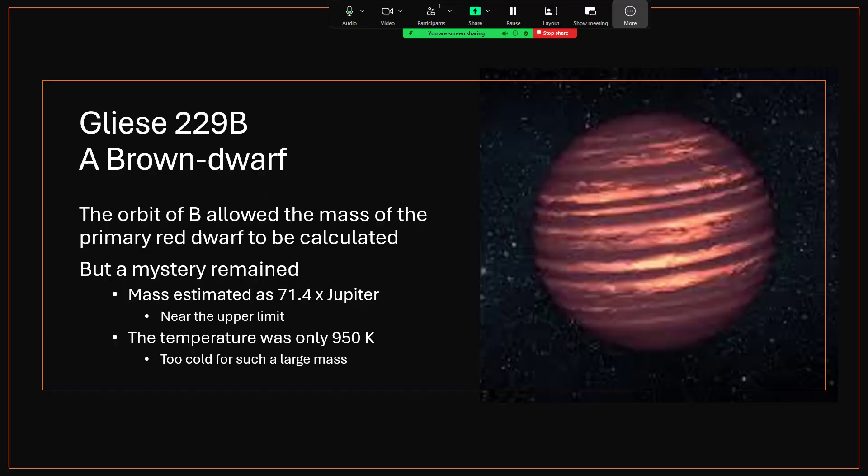So Gliese 229B enabled us to calculate from that 350-year orbit, and from the radius of the orbit, you can use Kepler's laws to calculate the mass of the primary, but you can't from that calculate the mass of the brown dwarf itself. Estimates based on size, brightness, thermal radiation, a whole series of different methods, concluded that it was quite massive, and the estimate was 71.4 times the mass of Jupiter. Now that's near the upper end of the mass scale for brown dwarfs, just about as heavy as they can get.